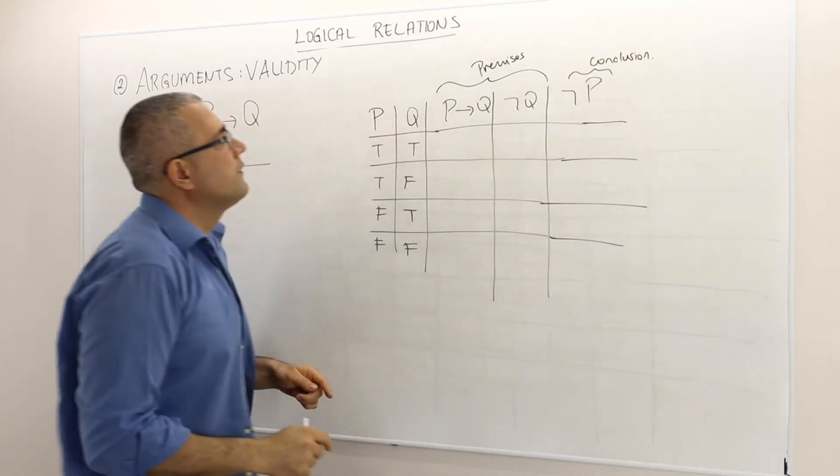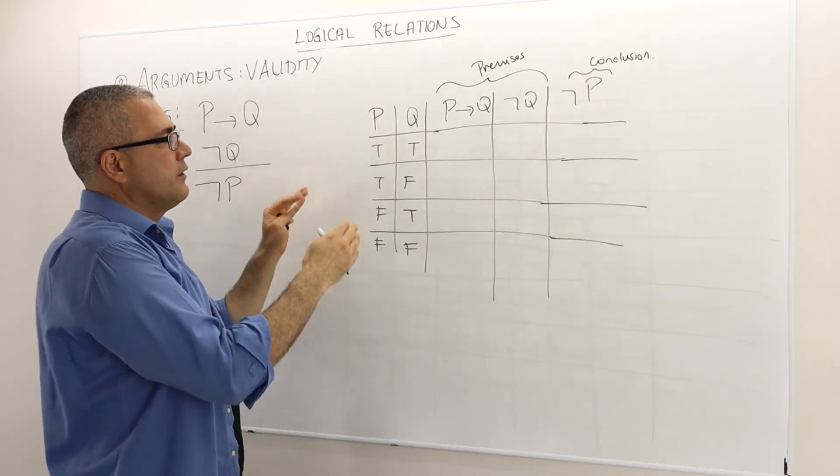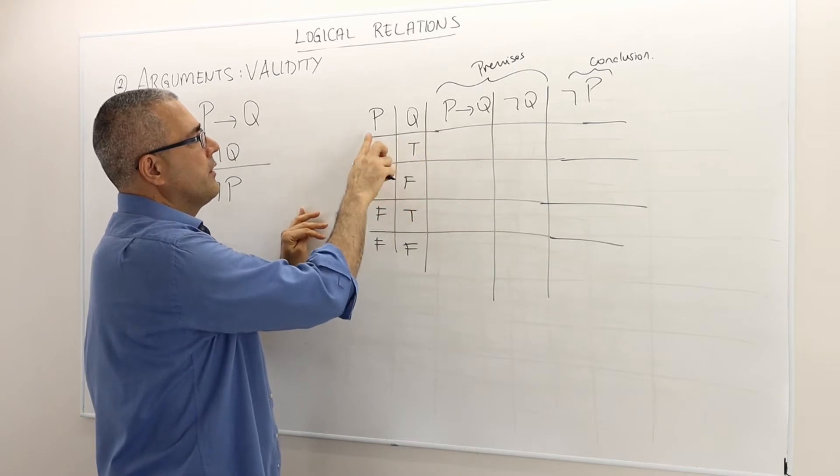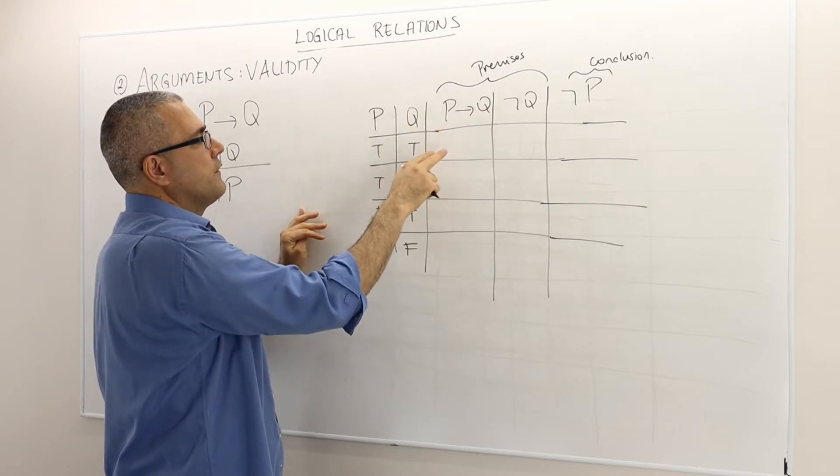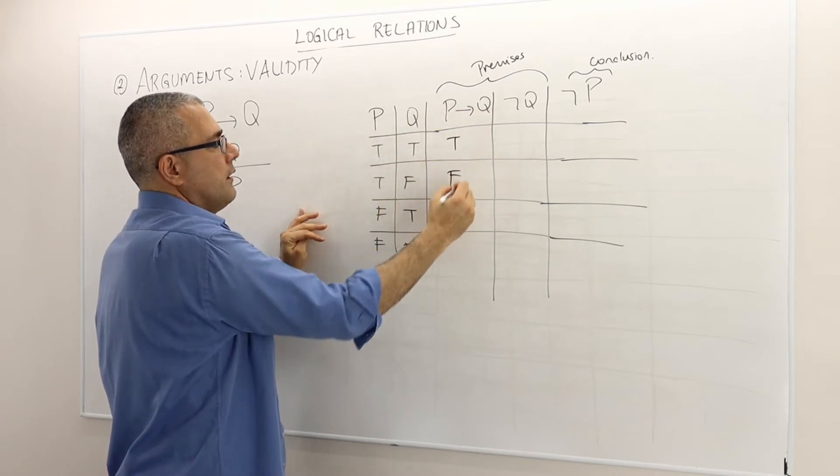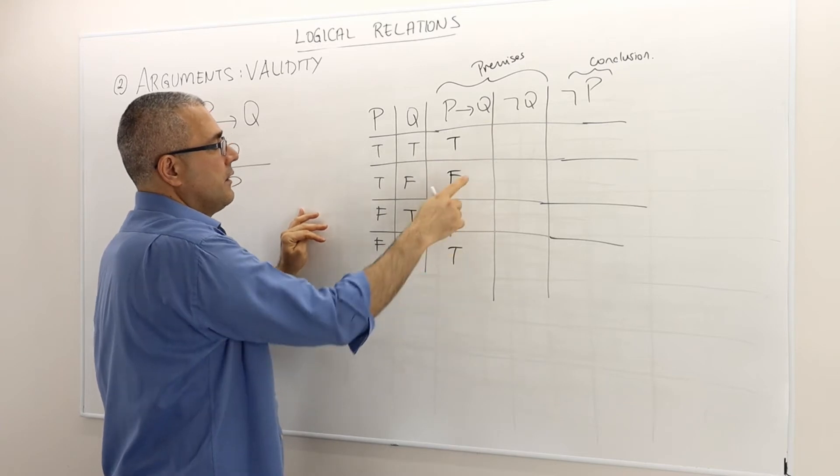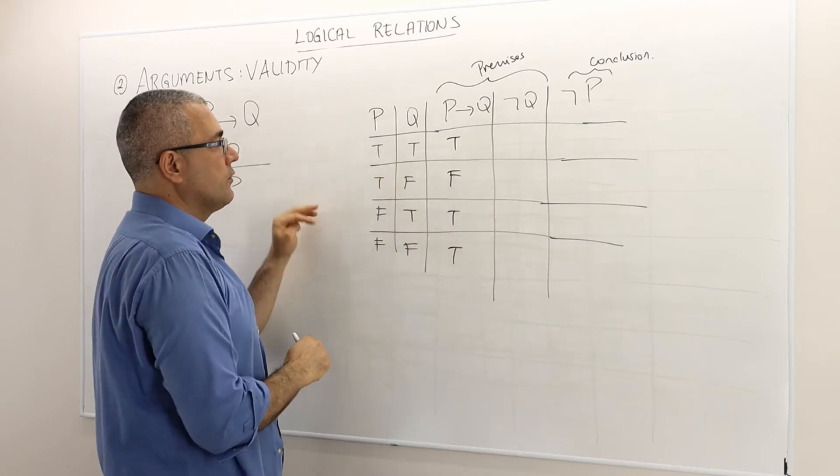Okay. So, the premises, I can determine their truth values by looking at P and Q. So, P implies Q is always true, except this case where Q is false and P is true.